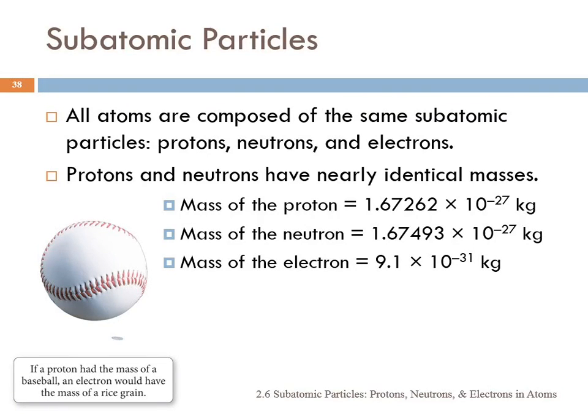So what are these particles inside of an atom? Collectively we call them subatomic. The prefix sub means below, so it's smaller in size than an atom. Subatomic particles. All atoms are composed of the same subatomic particles. The three most significant ones are protons, neutrons, and electrons.